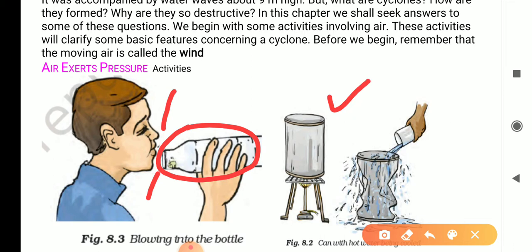In second activity, materials needed: air, a tin can with an airtight lid, water, burner and tongs. Take a tin can with a lid.